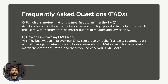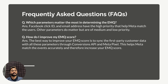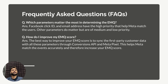The most important question: how do I improve my EMQ score? The best way is to sync first-party customer data with all of these parameters through the Conversions API and Meta Pixel — both server-side and browser-side. When you send events both ways and turn on enhanced advanced matching, you send data accurately to Meta without any loss. When Meta receives that accurate data, it matches users in its database accurately, increasing your EMQ score.